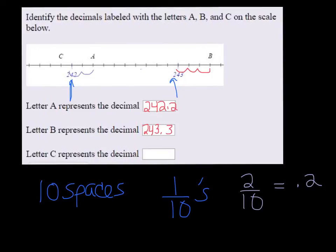The letter C is one hop to the left. So that's actually 241. It's a little bit less than 242. And since it's just one hop to the left, it's going to be 241.9 because if you go backwards, it's 0.9, 0.8, 0.7, and so on and so forth.